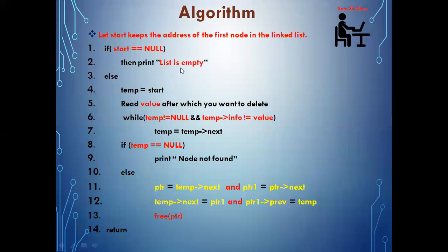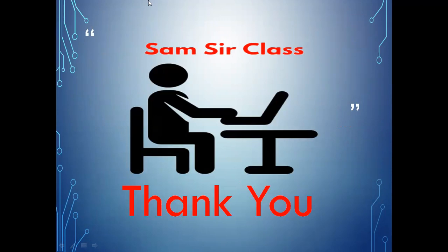The same thing is incorporated in the algorithm: first check if list is empty, otherwise give the value of start to temp, then enter the value after which you want to delete. Use the loop to confirm whether the node is present. If node is not present, temp will be null; otherwise, ptr will be temp->next and ptr1 will be ptr->next, and we delete the node in between. I suggest copying the single linked list program, understanding it, and doing the required modifications to realize the difference. Thank you everyone for watching.